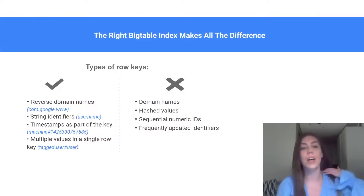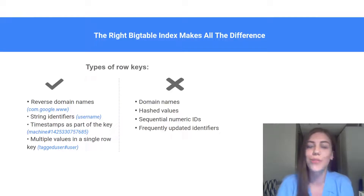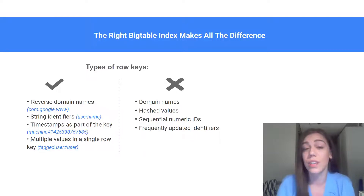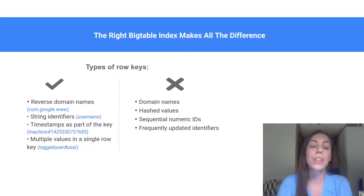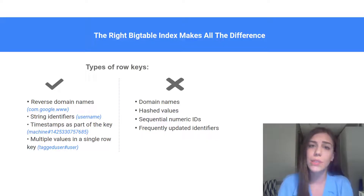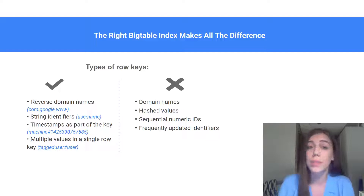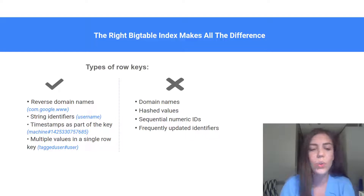Does designing a schema and choosing the right key affect performance? Of course. Some tips: avoid schemas that require atomicity across rows. For row keys, you can use reverse domain names. Every information about the same page will be stored close together in the database. Use readable identifiers instead of hash values because debugging human-readable keys is much easier. If data has to be retrieved by time, you can use a timestamp as part of your row key, but not at the beginning because everything will be concentrated on one node. Multiple values in a single row key can also be useful.